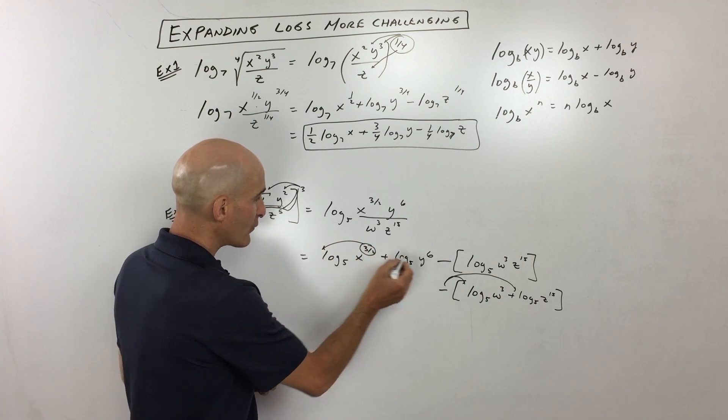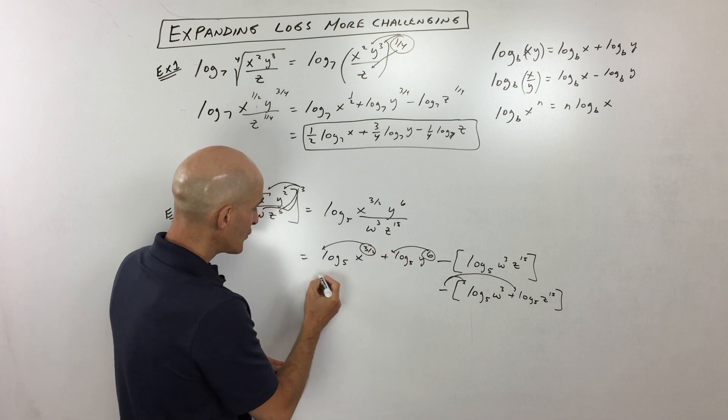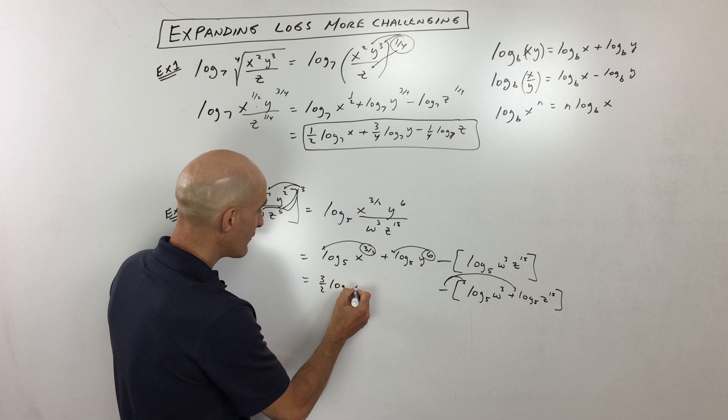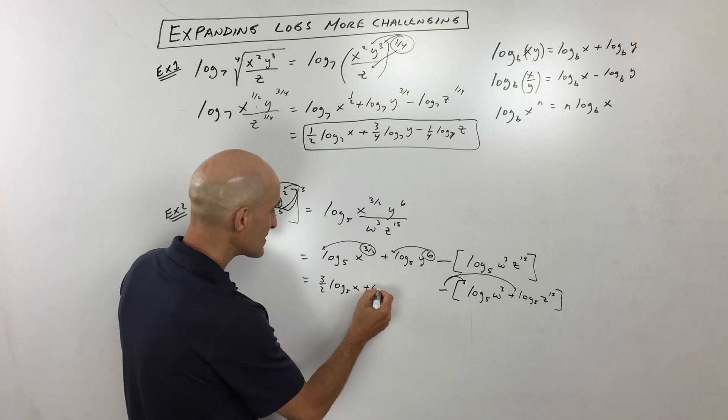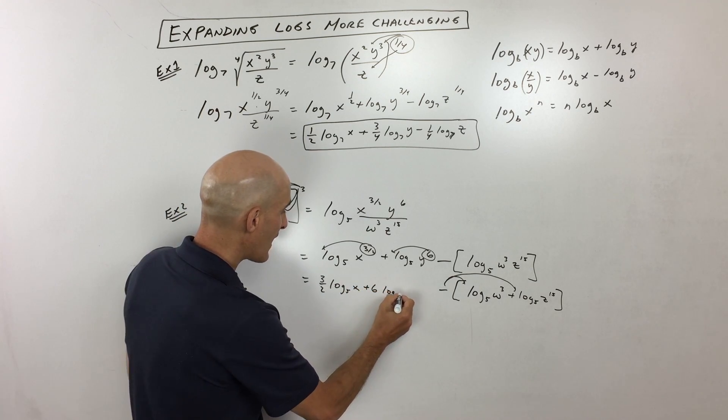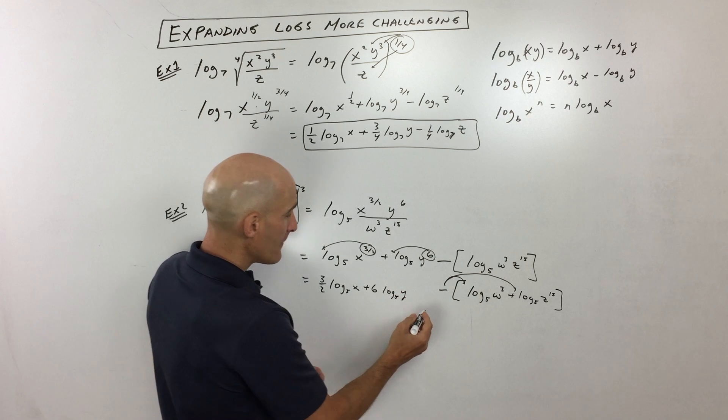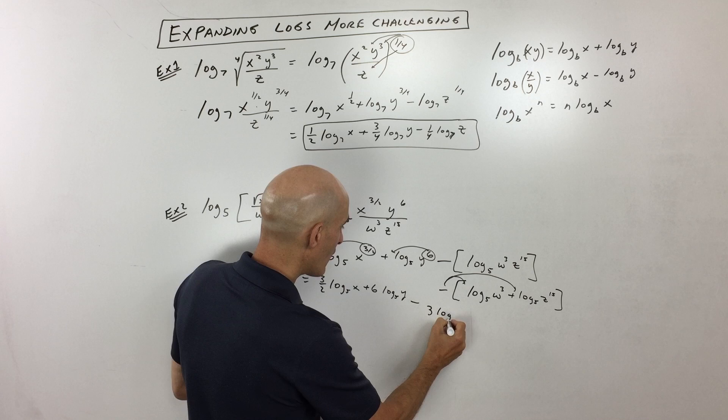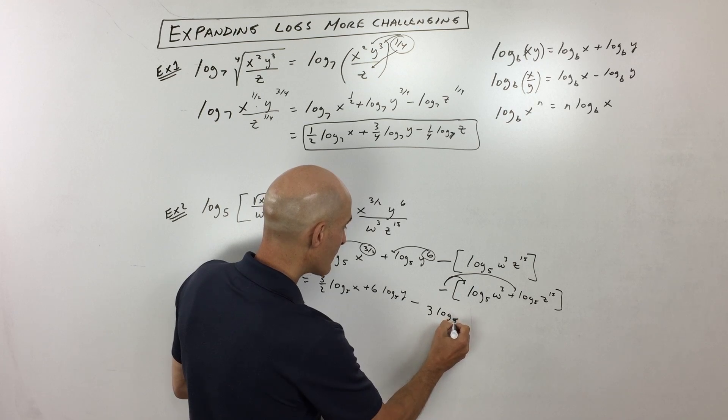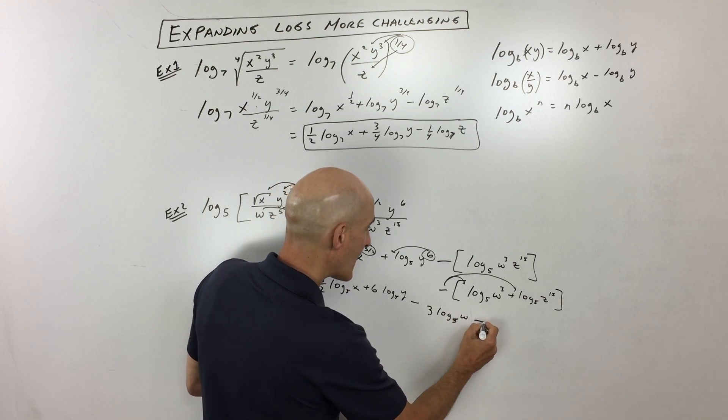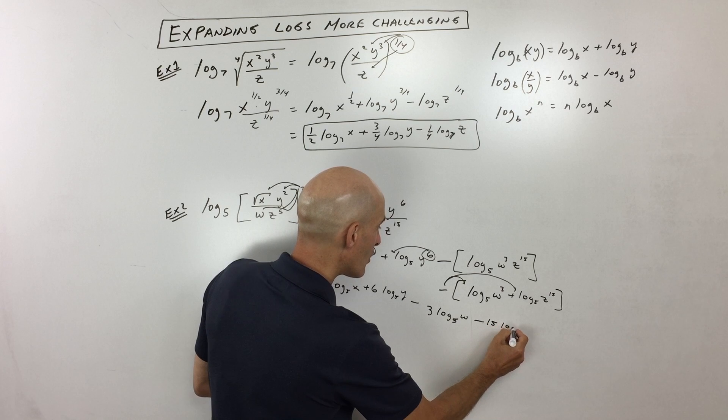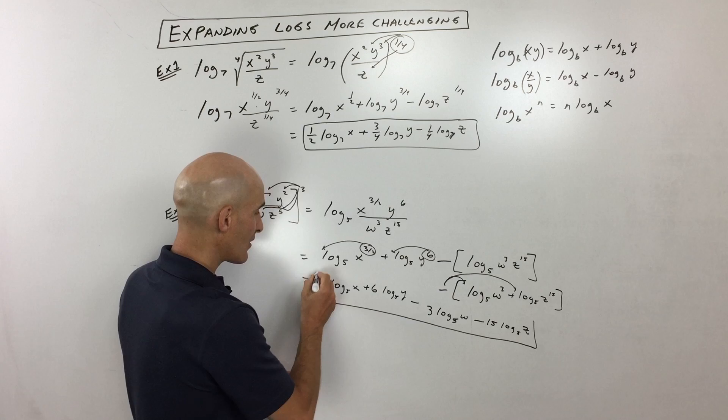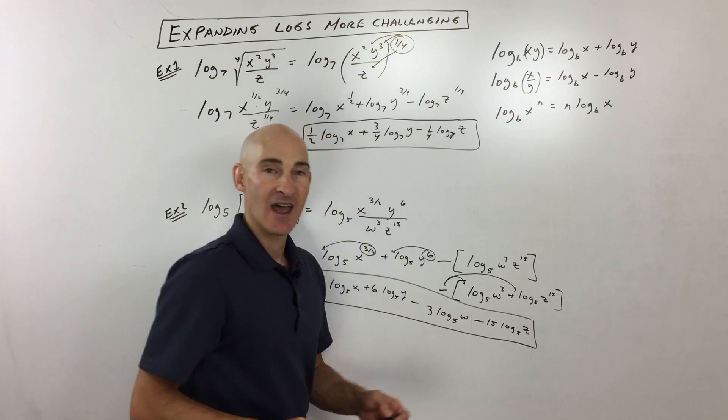So let's bring these powers now down in front. So what I'm going to do is I'm going to write this as three halves log base five of x plus six log base five of y minus three log base five of z. And that's it right there fully expanded. And you've got it.